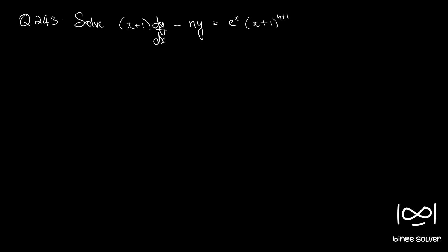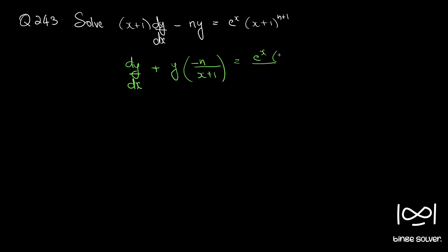Question number 243: solve (x+1) dy/dx minus ny equals e^x into (x+1)^(n+1). Rearranging, we have dy/dx minus n by (x+1) times y equals e^x into (x+1)^(n+1).